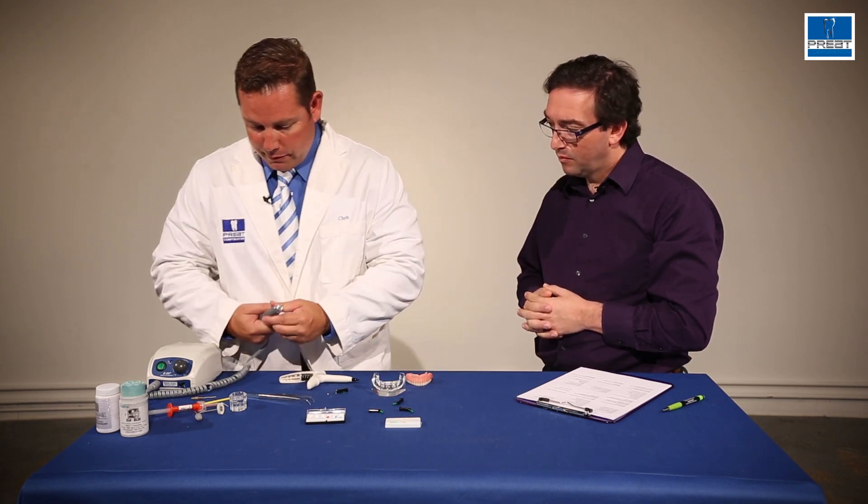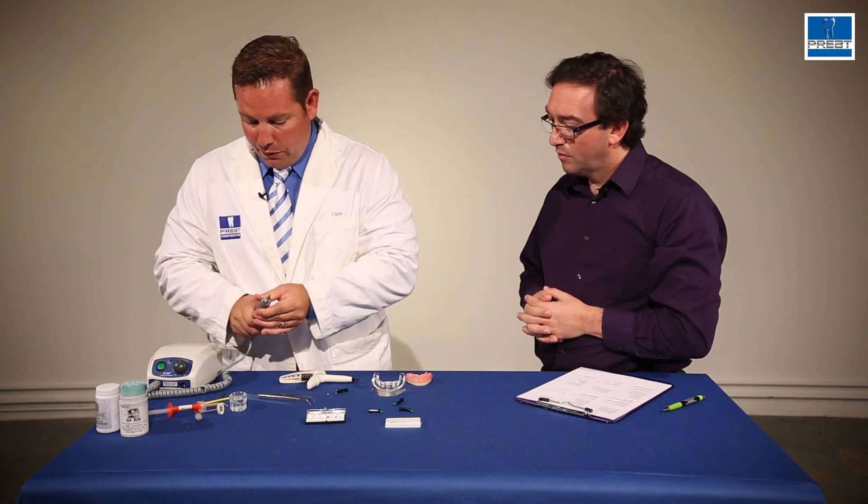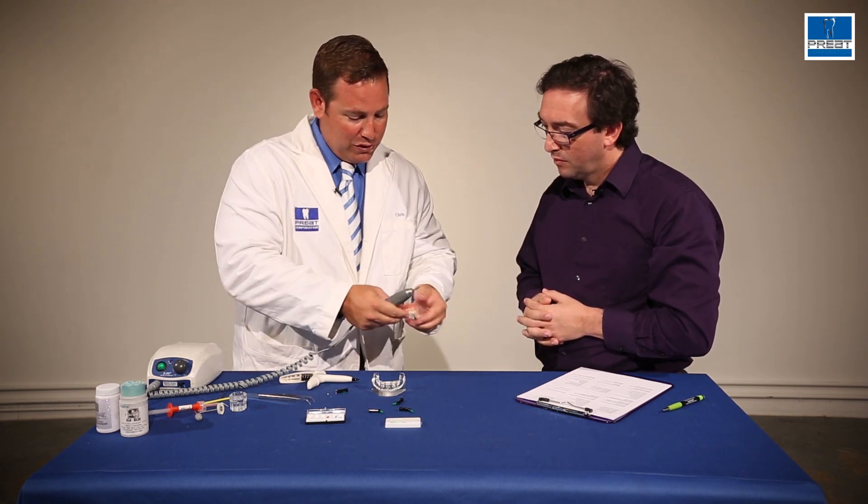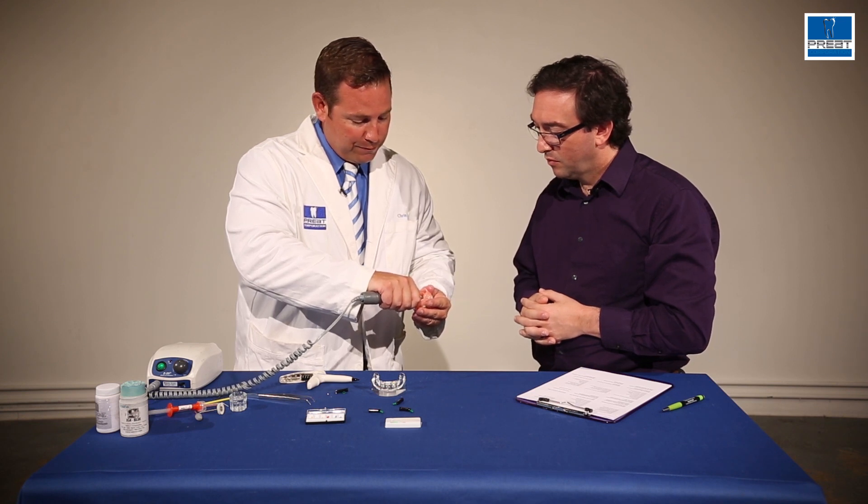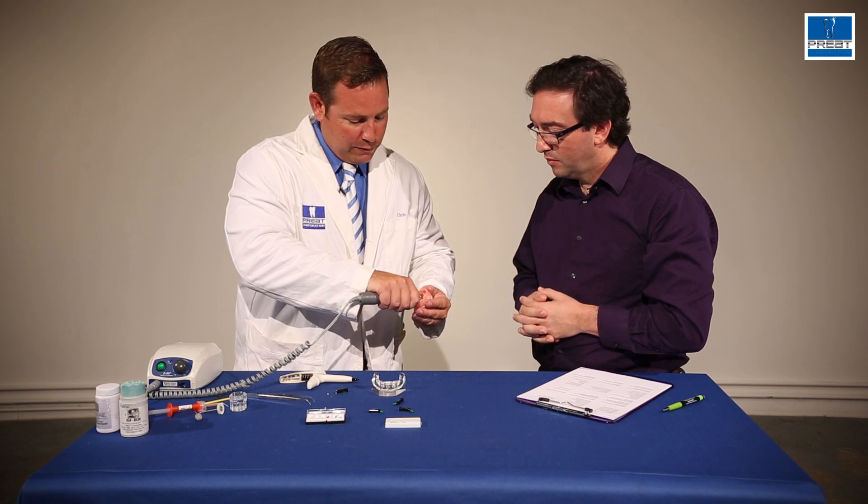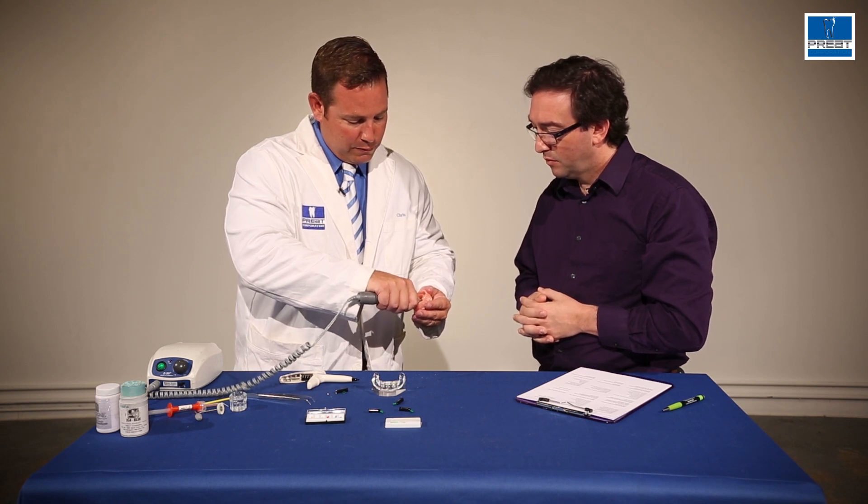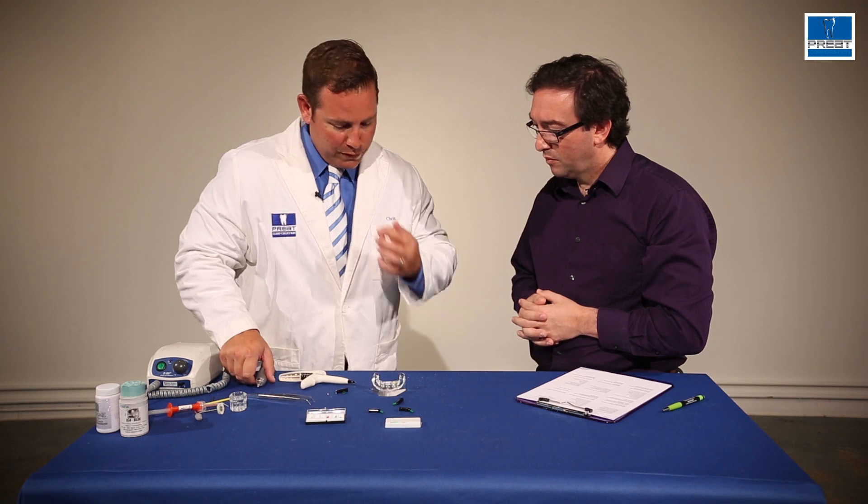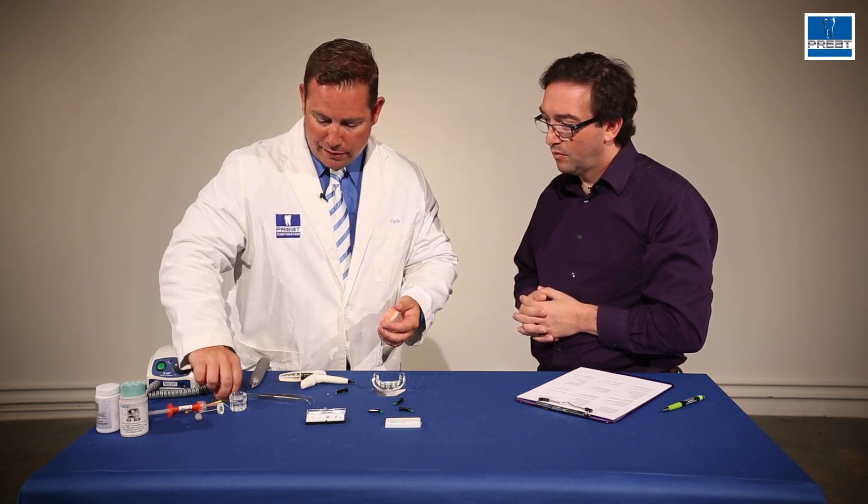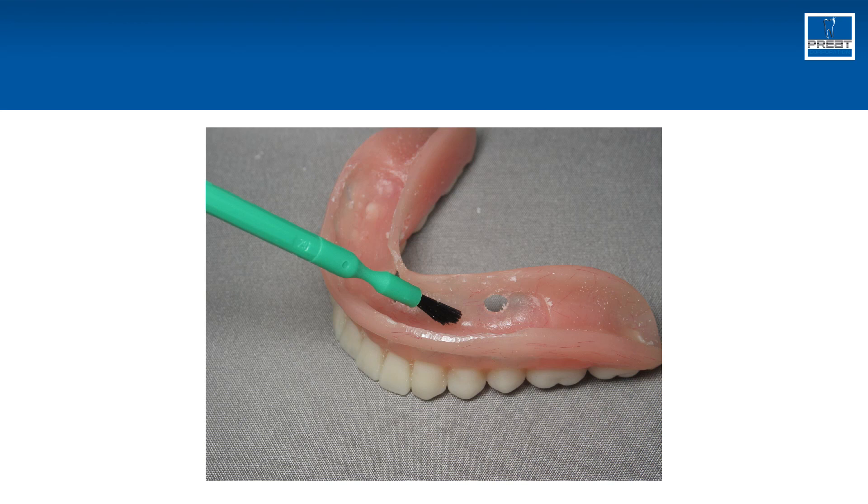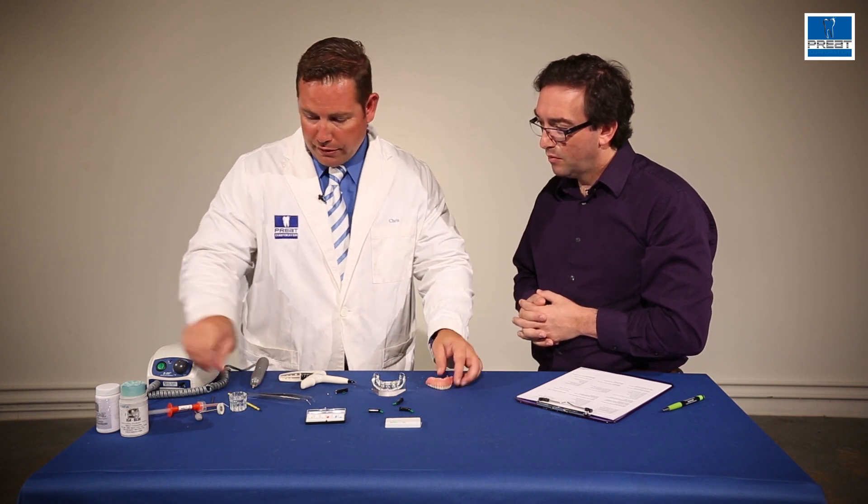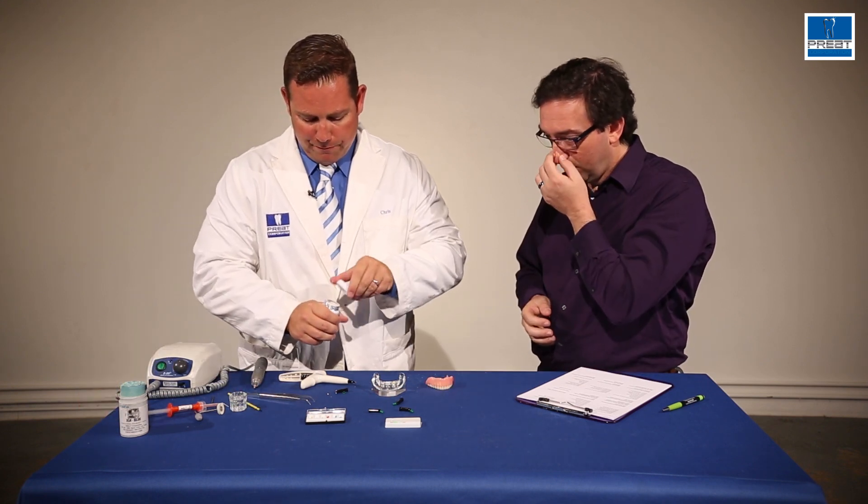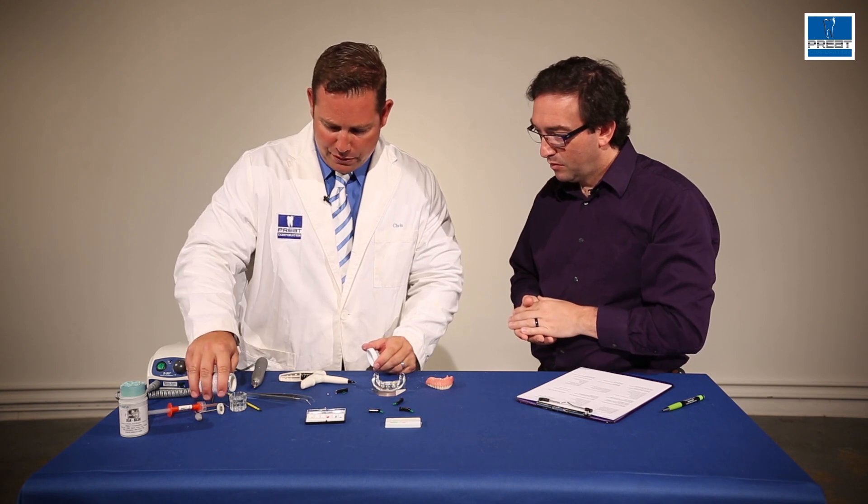At this point, I'm going to come in. I've already relieved sufficient space inside the denture where I want to pick up the clips. I'm going to take my brush again, paint a little bit of monomer to the area I want to add acrylic. And at this point, while I let that dry, I'm going to mix up a little bit of self-cure resin here.